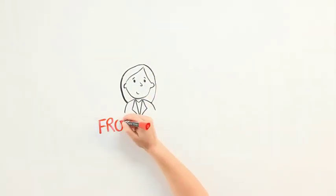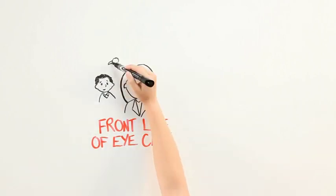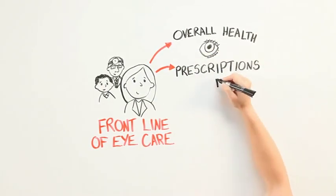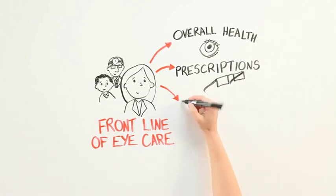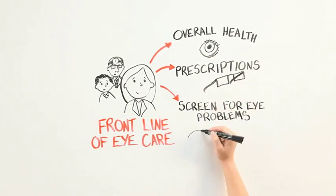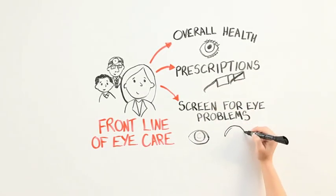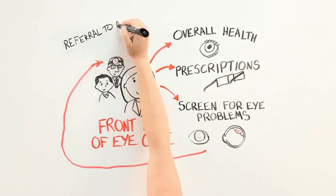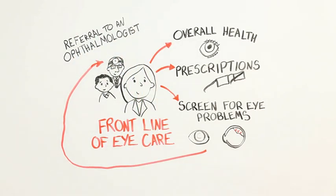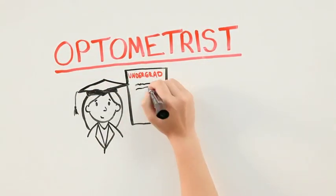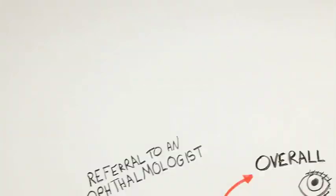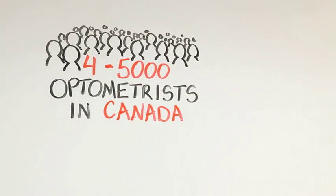Optometrists are often in the front line of eye care in the medical system. An optometrist looks at the overall health of your eye and can give prescriptions for eyeglasses to sharpen your vision. Optometrists are trained to screen for eye problems like cataract or retinal detachment that need emergency attention, and they refer patients who need advanced or urgent care directly to an ophthalmologist. An optometrist typically does an undergraduate degree and then goes to a school of optometry for four years. There are about 4,000 to 5,000 optometrists in Canada.